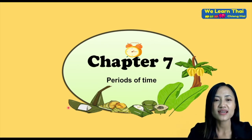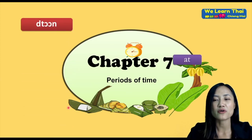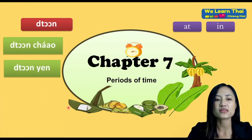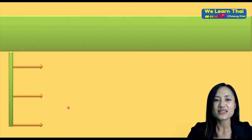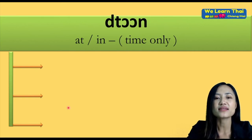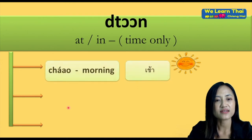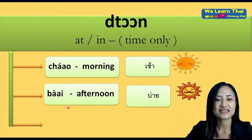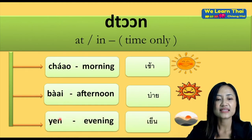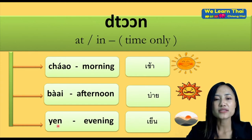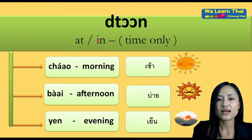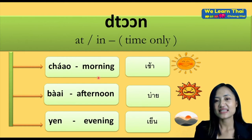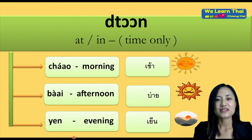The word you will be learning in this chapter means 'at' or 'in', and we use it only for time. For example, 'in the morning' or 'in the evening'. So the word 'thawn' means at or in, used for time only: morning, afternoon, evening. When you want to say 'in the morning' you say 'thawn chao', in the afternoon 'thawn bye', in the evening 'thawn yen'. Don't forget to pronounce after me.